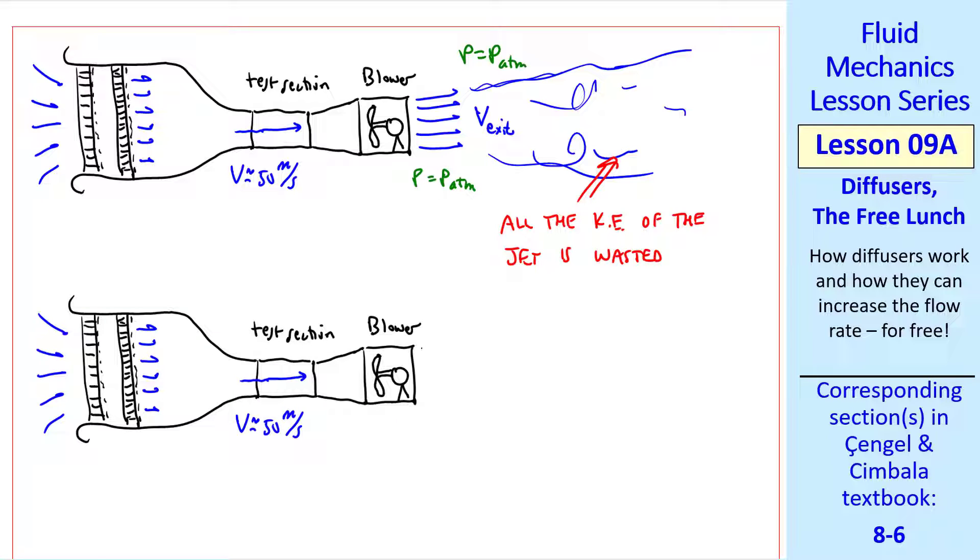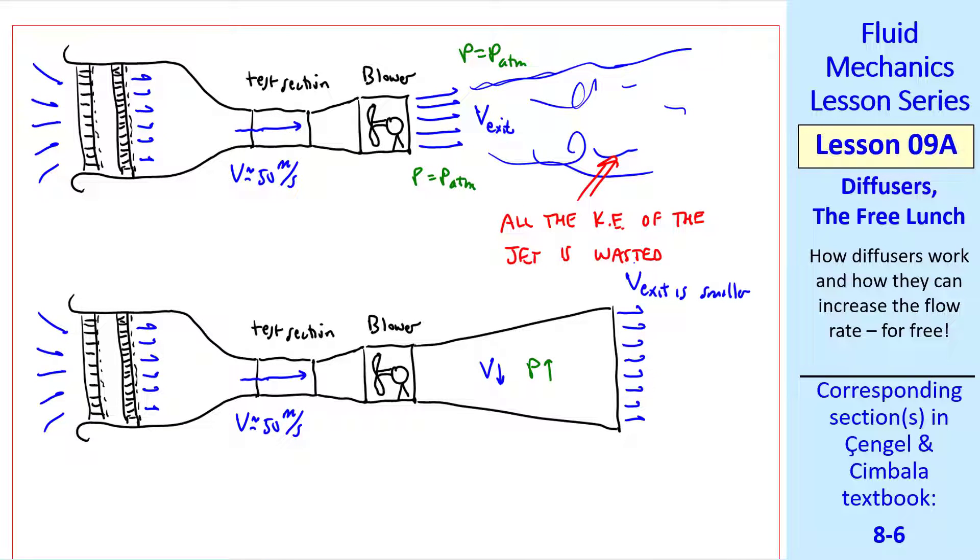So what I did in my wind tunnel was add a nice diffuser. Recall that V goes down and P goes up through the diffuser. So V exit is smaller. All of this jet kinetic energy is also wasted, converted to heat. But kinetic energy is proportional to V squared. So at the same flow rate we're wasting less kinetic energy.